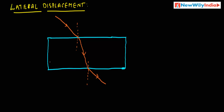This is glass and this is air. This medium is air and this medium is glass. The light ray passes from denser medium to rarer medium, so it will get refracted and is away from the normal. This ray is called the emergent ray.